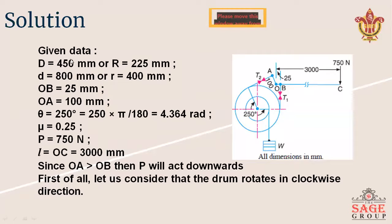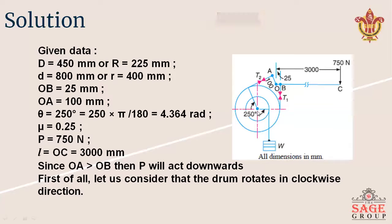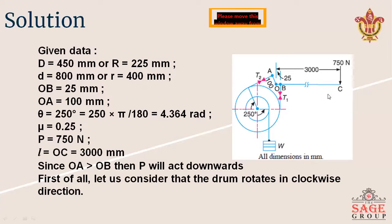Here you can see the given data and the diagram of the differential band brake. This is the drum and the diameter of this drum is 800 mm. This is the barrel and the diameter of the barrel is 450 mm, and both are keyed to the same shaft. The length L is equal to 3000 mm, and the distances are 25 mm and 100 mm, with 750 Newton applied at the end of the lever.